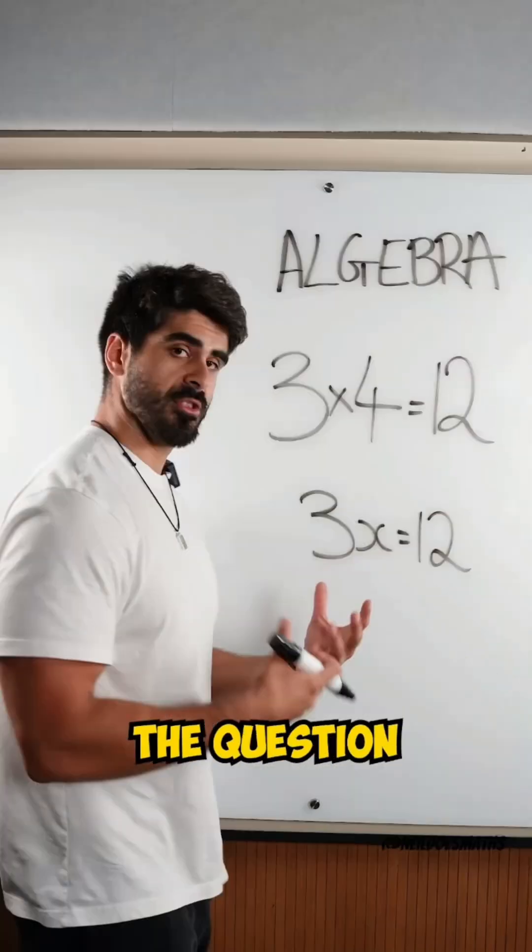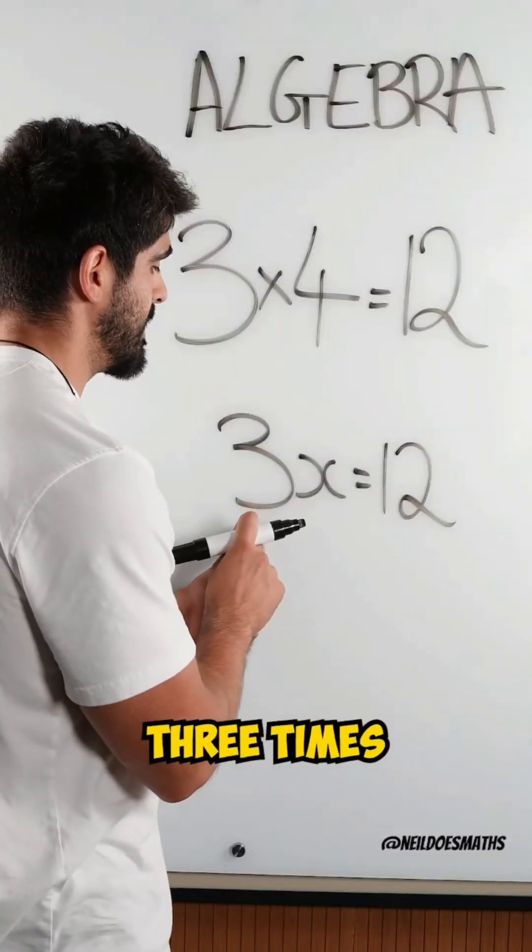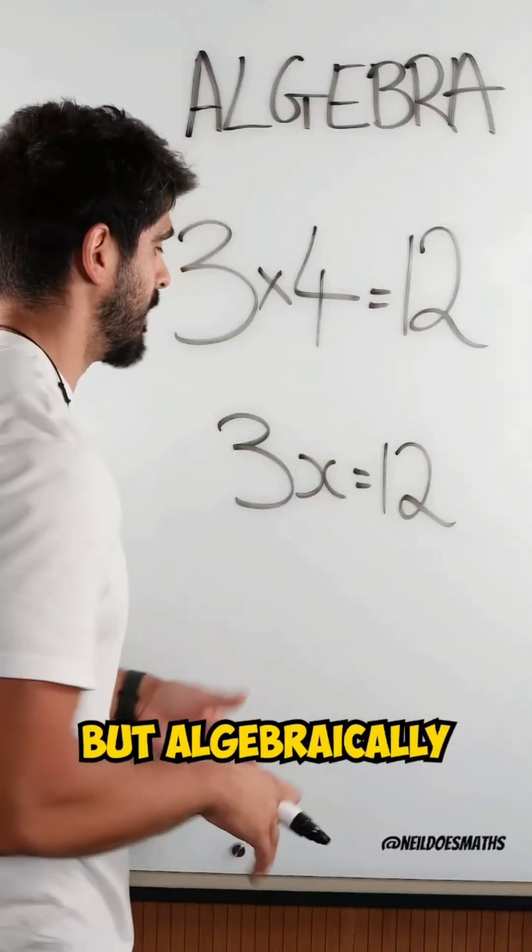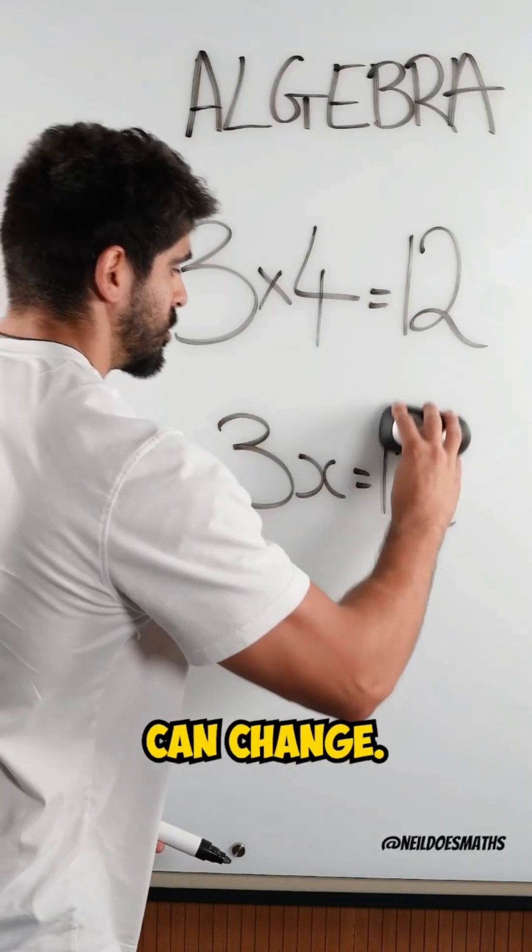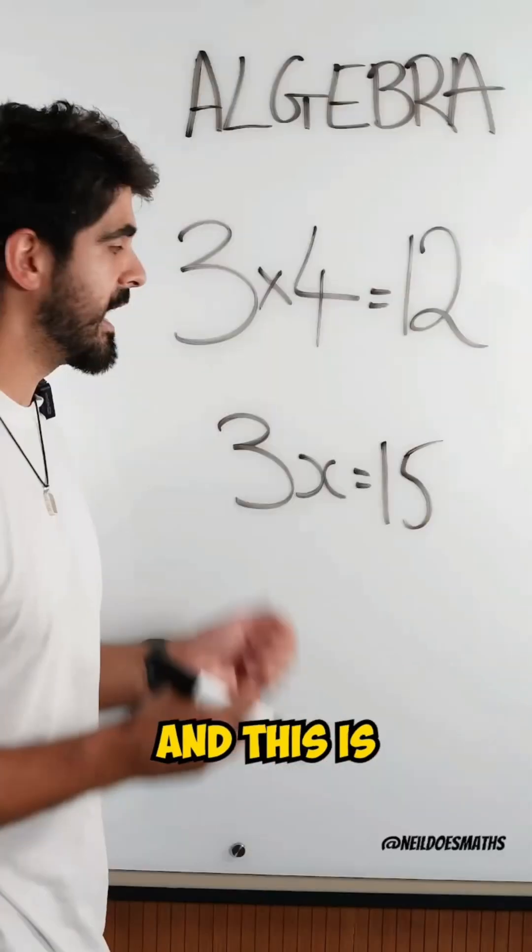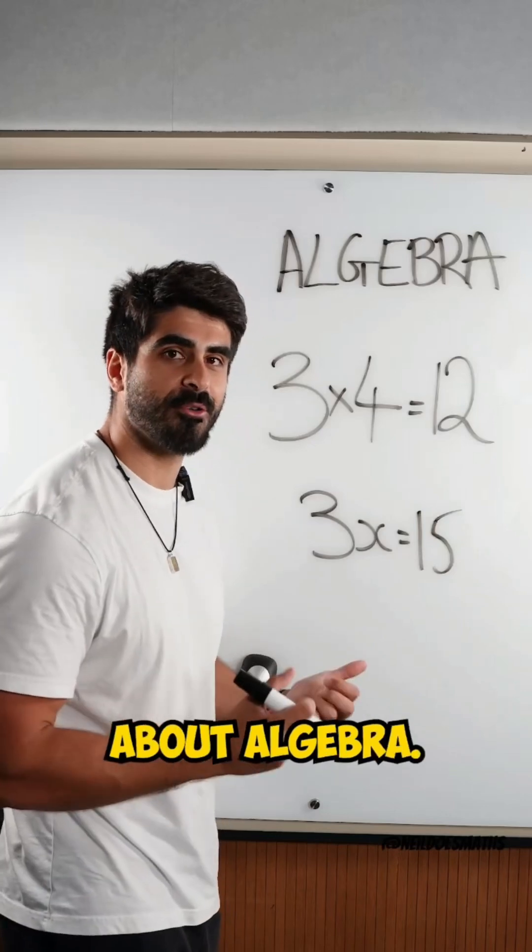So in this problem, the question is asking us, 3 times what is 12? And we know the answer is 4. But algebraically, this problem can change. If I change that 12 to 15, my x value changes to 5. And this is what's cool about algebra.